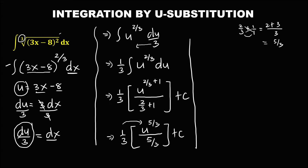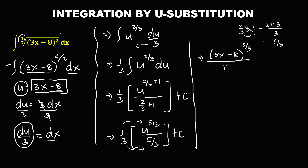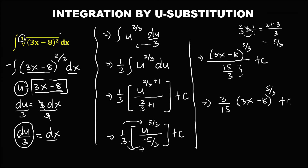Then to simplify, multiply: so u is equal to 3x minus 8, so we have the quantity of 3x minus 8 to the power 5 over 3, over — multiply — so 3 times 5 over 3 is equal to 15 over 3. Then for the final answer, we take the inverse of this denominator, so 15 over 3 becomes 3 over 15, then the quantity of 3x minus 8 to the power 5 over 3, then plus C.